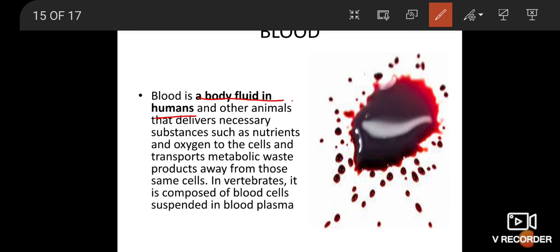In vertebrates, it is composed of blood cells suspended in blood plasma. What is plasma? Plasma is a slightly alkaline non-cellular substance which constitutes about 55% of the blood. Organic substances like proteins, glucose, urea, enzymes, hormones, vitamins, and minerals are present in the plasma.